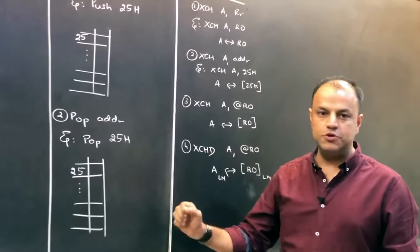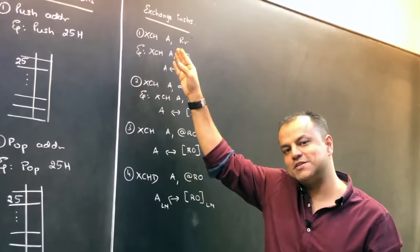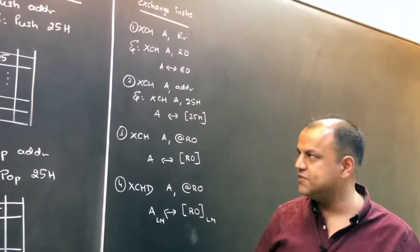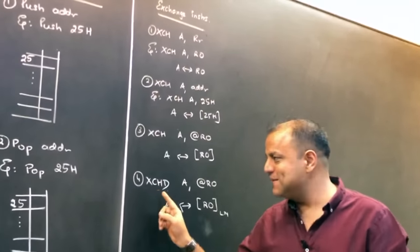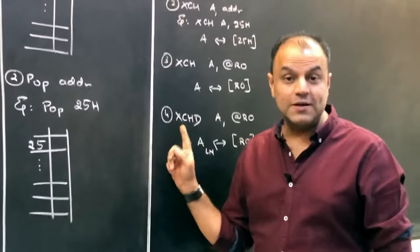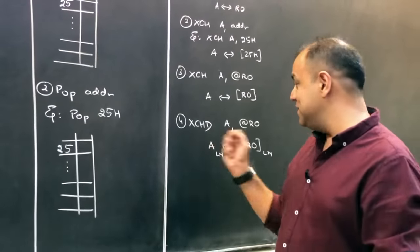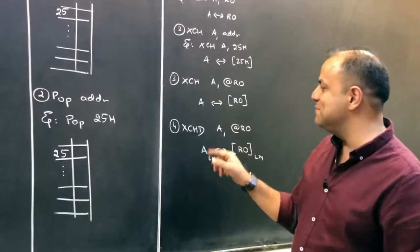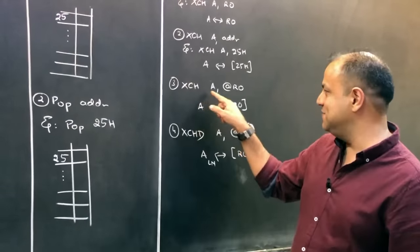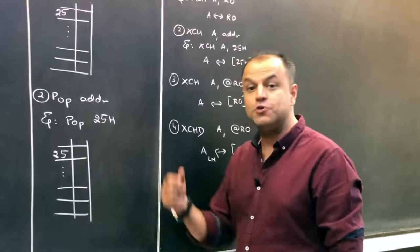Finally, the last part of this group: exchange instructions. They are pretty simple, the name itself is the answer. They will exchange the value of the two registers. There is a typical instruction, XCHD. This comes a lot in the exam because many students ignore this instruction. When they suddenly see it in the exam, they think it's a typing mistake, that D is just extra. There is an XCH with the same operands, there is an XCHD. There is a difference between the two.